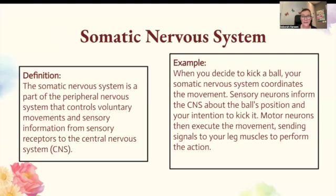The somatic nervous system is a part of the peripheral nervous system that controls voluntary movements and transmits sensory information from sensory receptors to the central nervous system. When you decide to kick a ball, your somatic nervous system coordinates the movement. Sensory neurons inform the CNS about the ball's position and your intention to kick it. Motor neurons then execute the movement, sending signals to your leg muscles to perform that action.